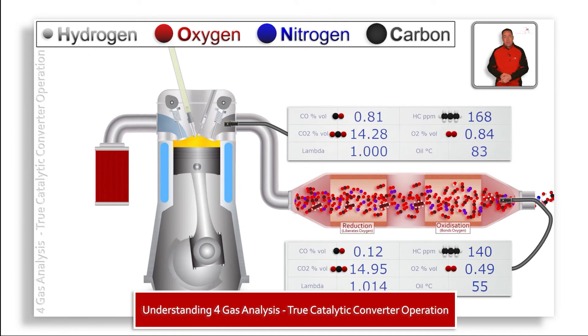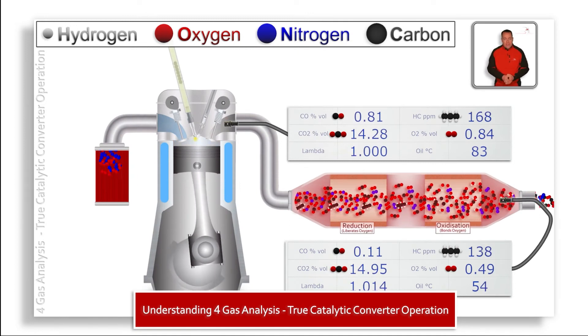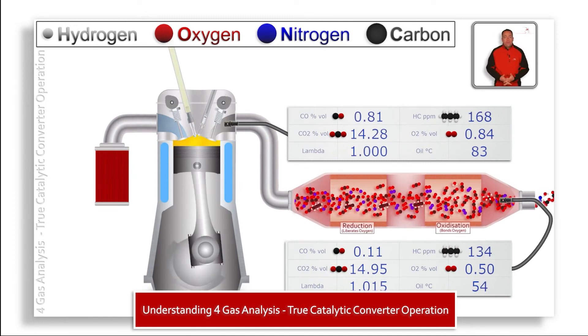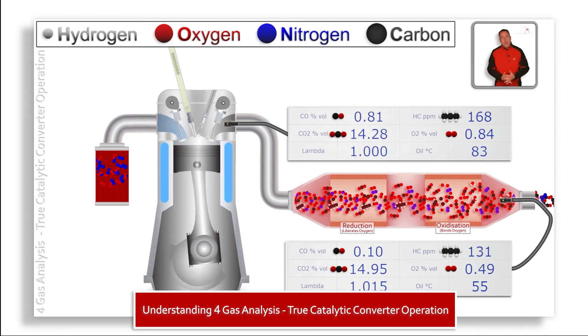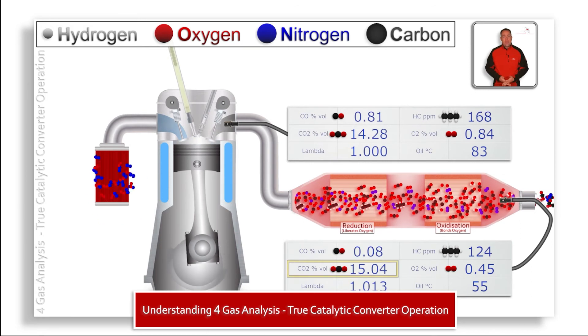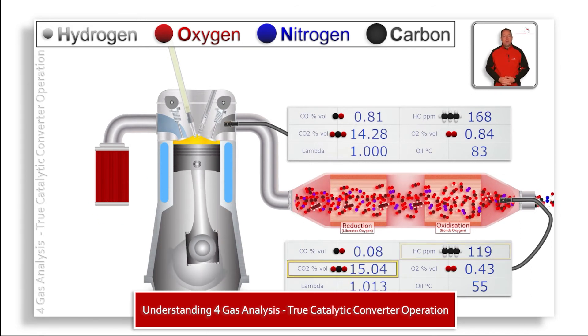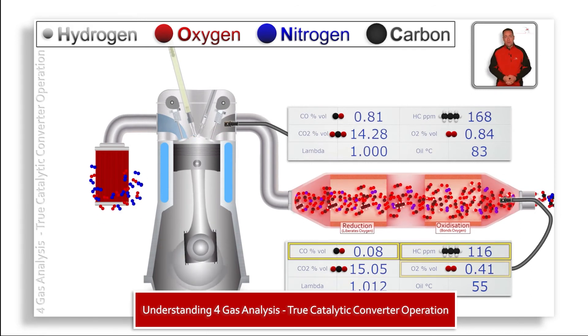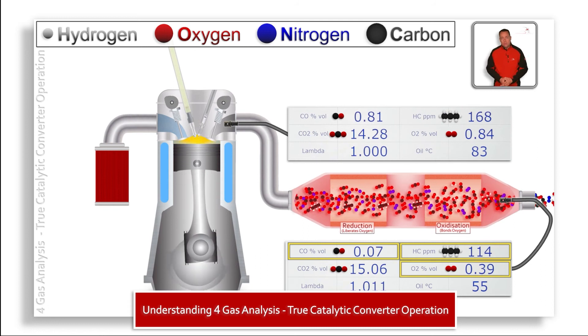As the cat processes CO, HC and O2 and turns them into CO2 and H2O, what we can see is the CO2 going up as the HC, the CO and the O2 goes down.